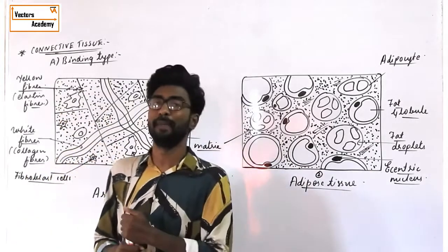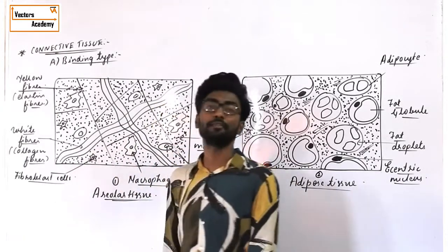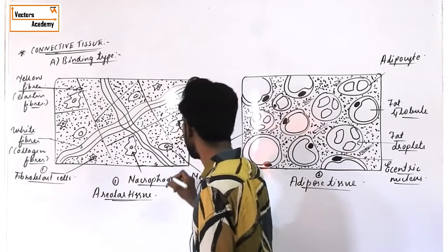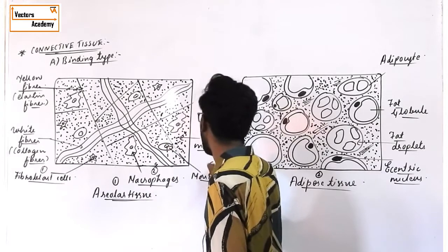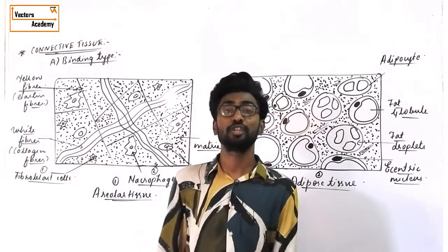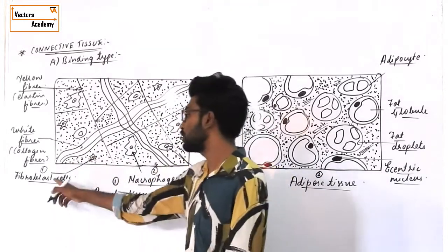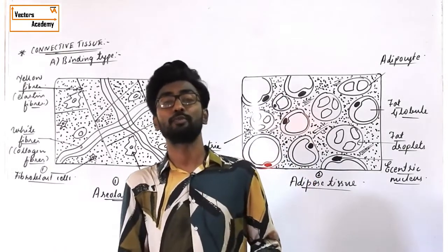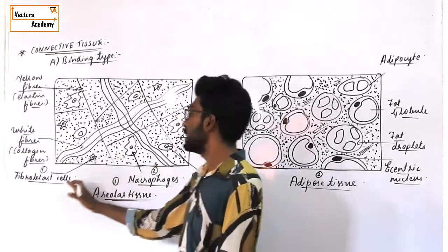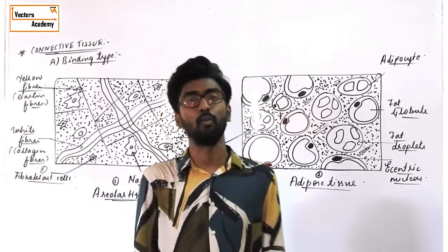The structure of areolar connective tissue is made up of two important parts: cells and fibers. There are three different types of cells. First is fibroblast cell — fibroblast cells are star-shaped or spindle-shaped, flat, numerous in number. They are responsible for the formation of fibers, basically the white fiber or collagen fiber.